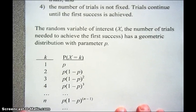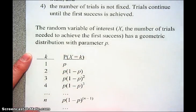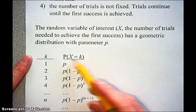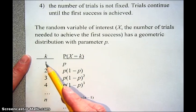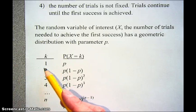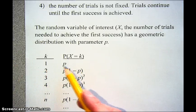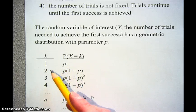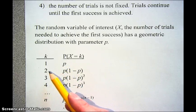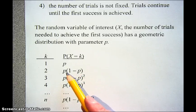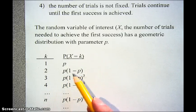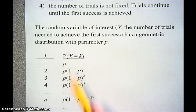Here are some different values that X could take on and the probabilities that X takes on each of those values. When K is 1, the first success comes on the first trial — the probability is just P. If the first success comes on the second trial, we had a failure on the first trial (that's where 1 minus P comes from) and a success on the second trial, giving probability P times (1 minus P).